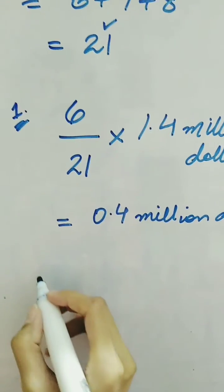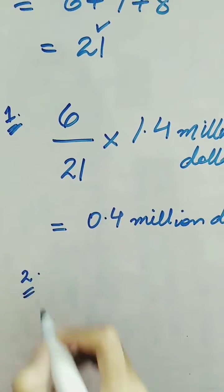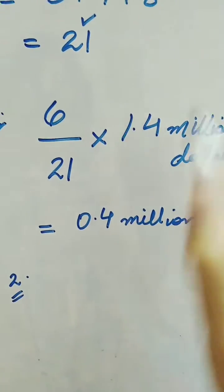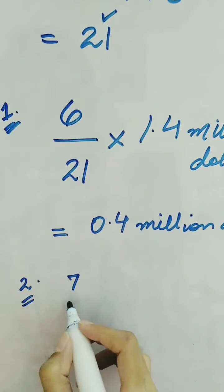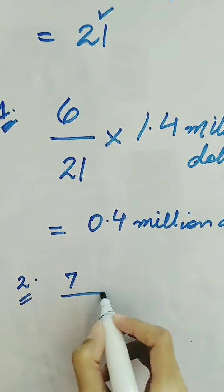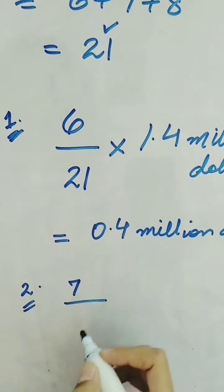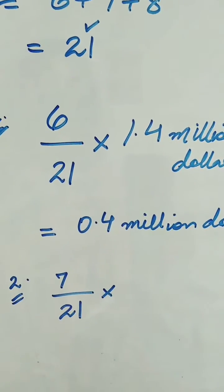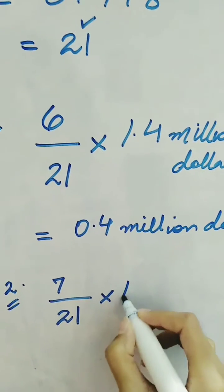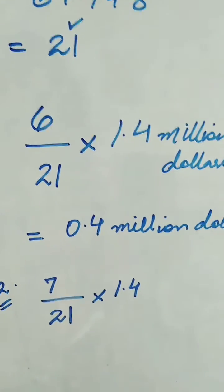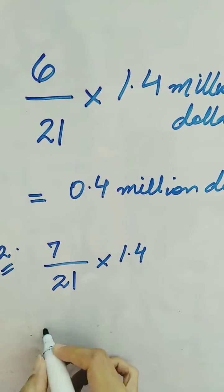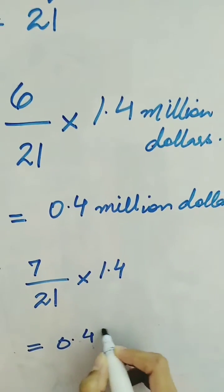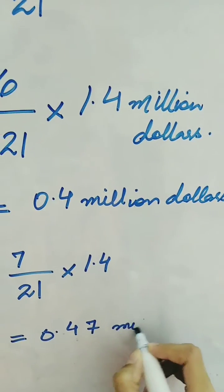In a similar way, we find the amount for the second child whose age is 28. The corresponding ratio is 7, so 7 goes in the numerator and 21 in the denominator. We multiply this by 1.4 million dollars, giving us 0.47 million dollars.